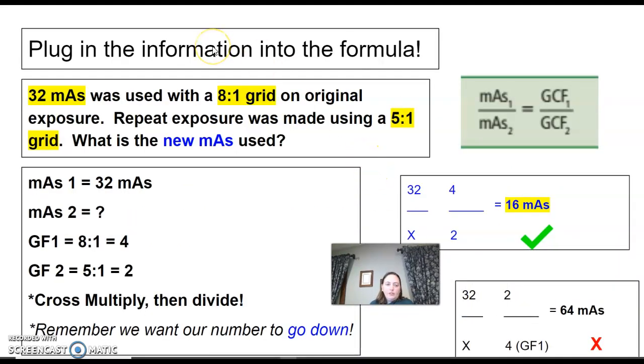Alright, so let's put the info into your formula. Same formula. 32 mAs was my mAs number 1. Again, we're looking for mAs number 2. 8:1 is my first grid, and that's a factor of 4. My grid that I'm swapping to, grid number 2 is a 5:1, and that's a factor of 2. You're just going to plug these numbers into your formula here, and then cross-multiply and divide.